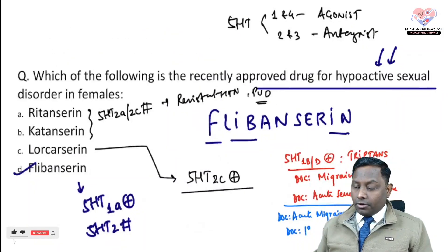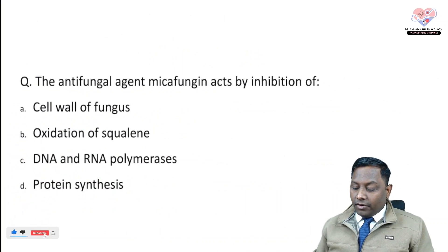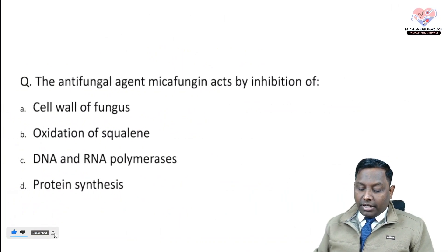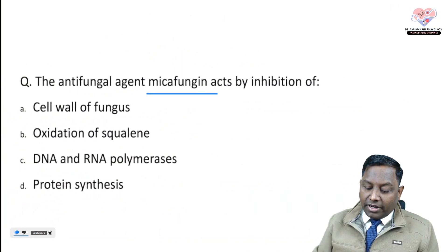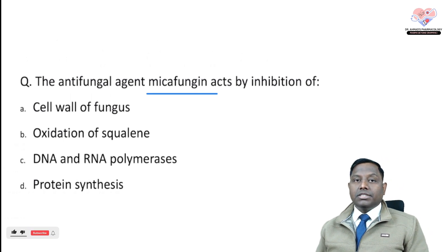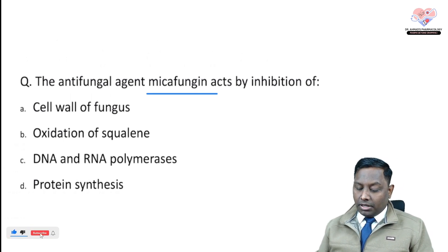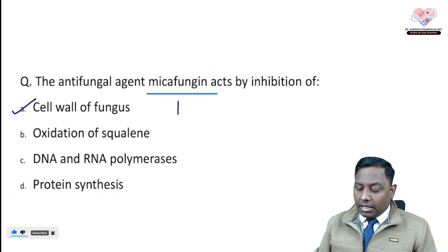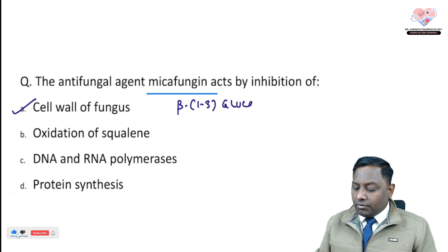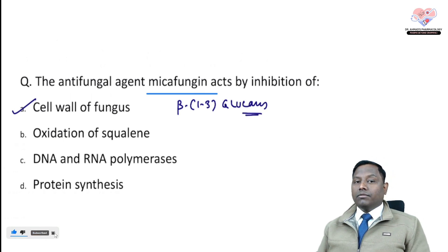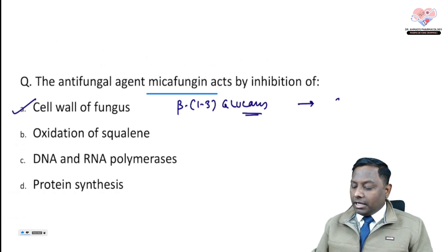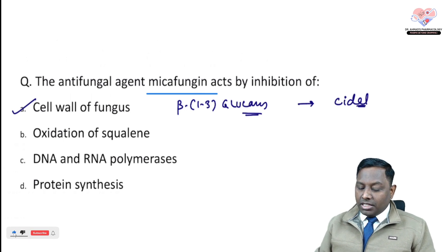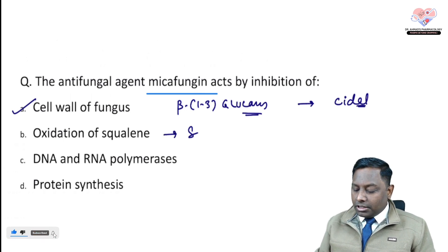The antifungal agents micafungin and anidulafungin are cell wall inhibitors. They act by targeting beta-1,3-glucans, which are an essential part of the fungal cell wall. Because they target the cell wall, they have cidal properties. Squalene epoxidase inhibitor is terbinafine.